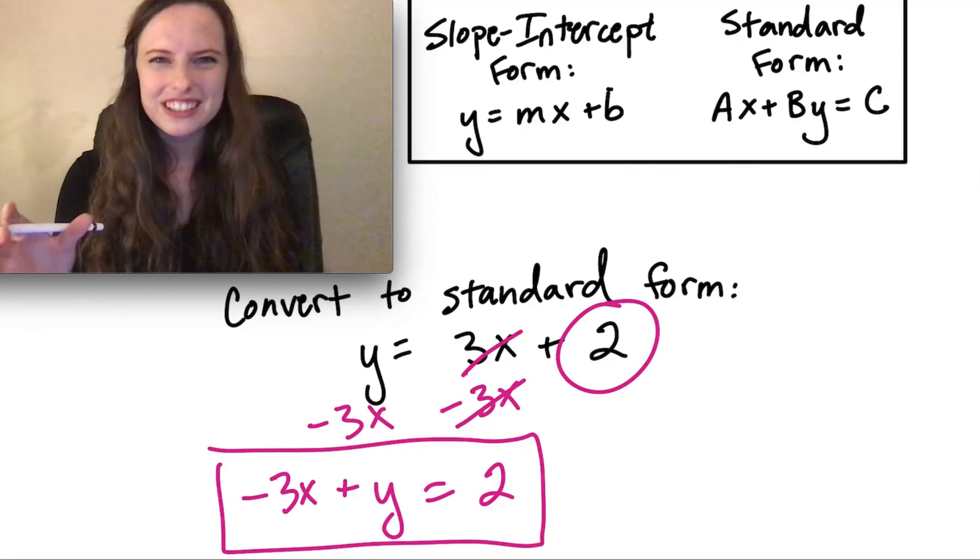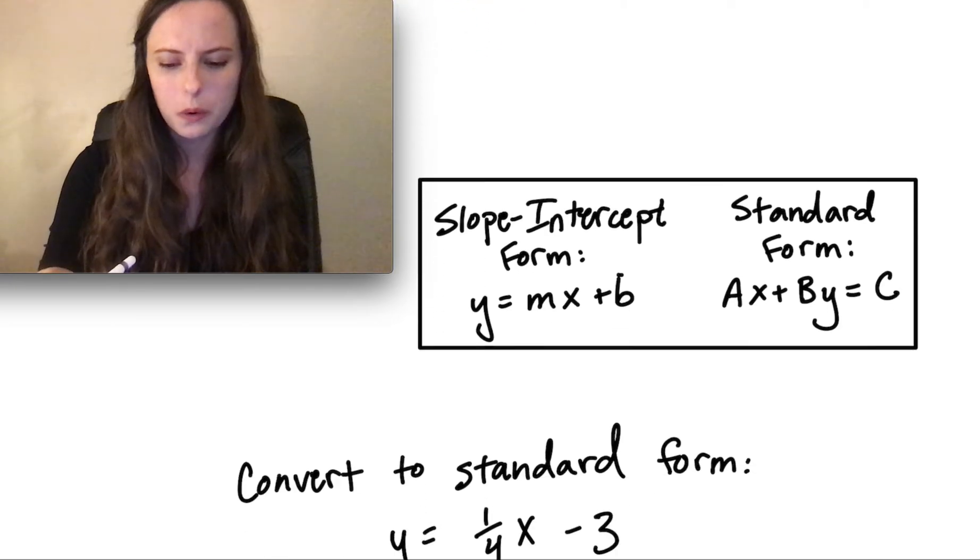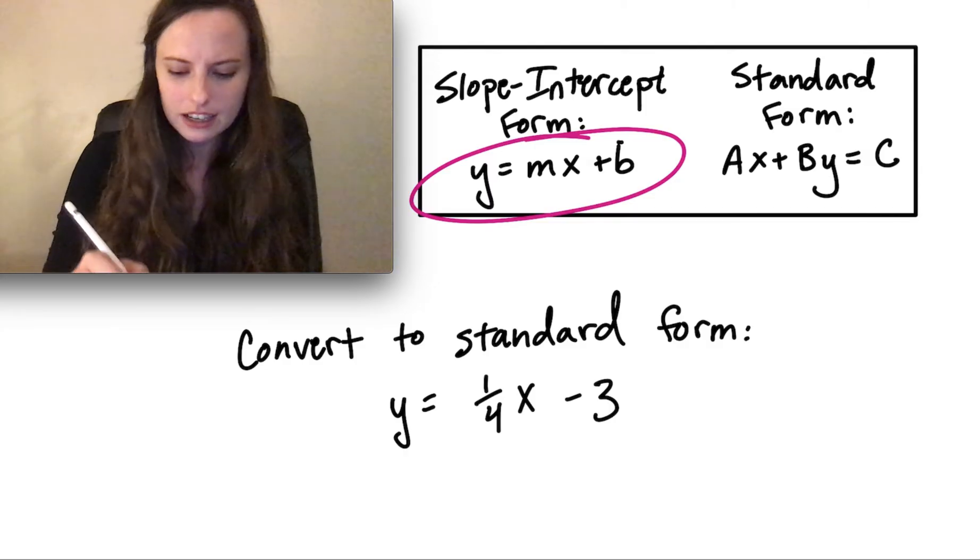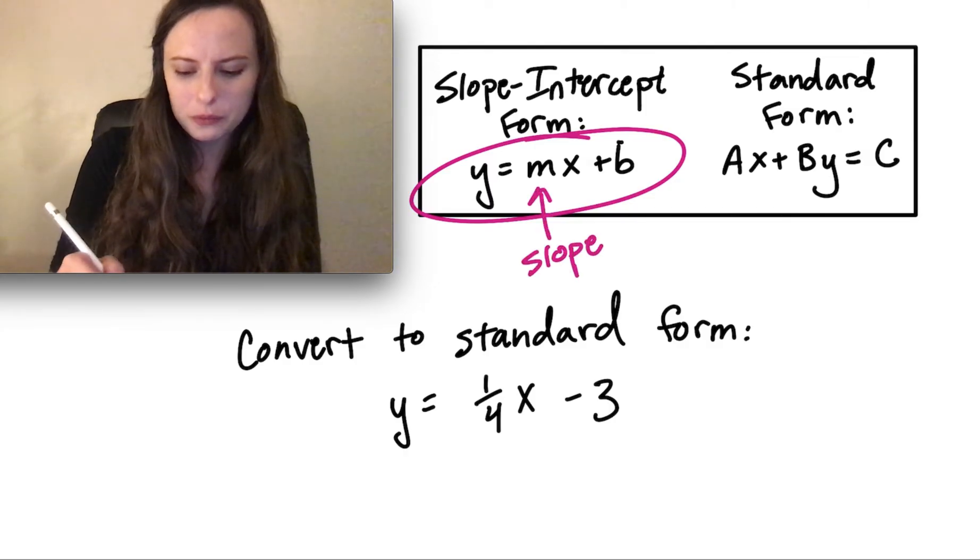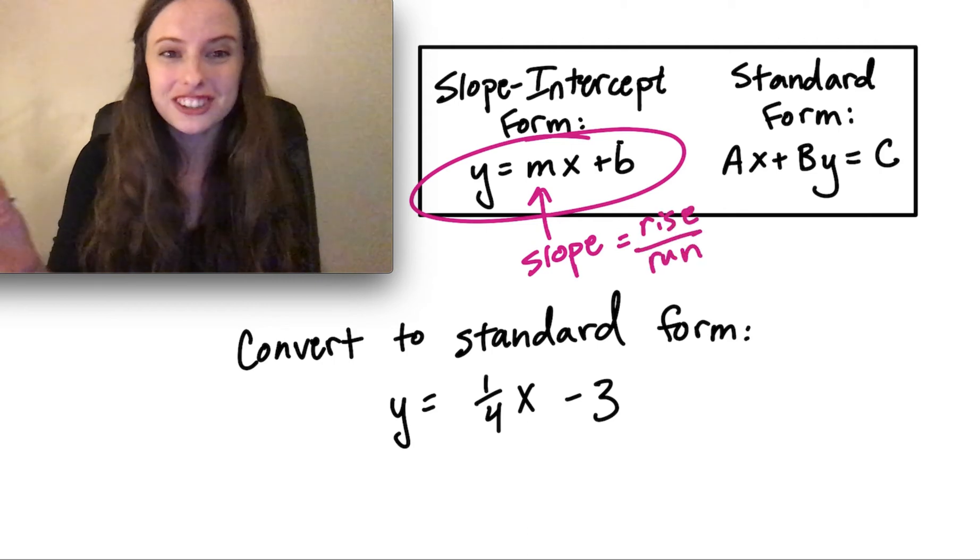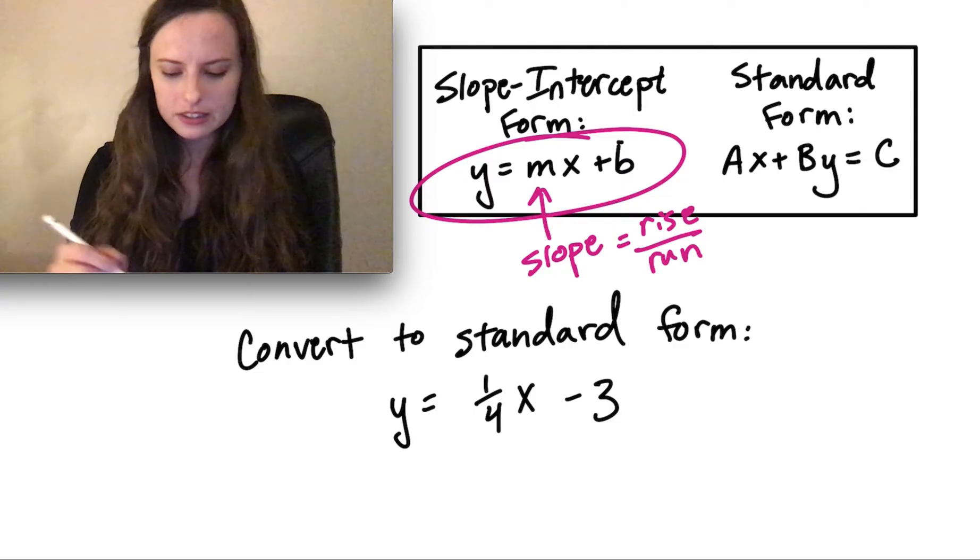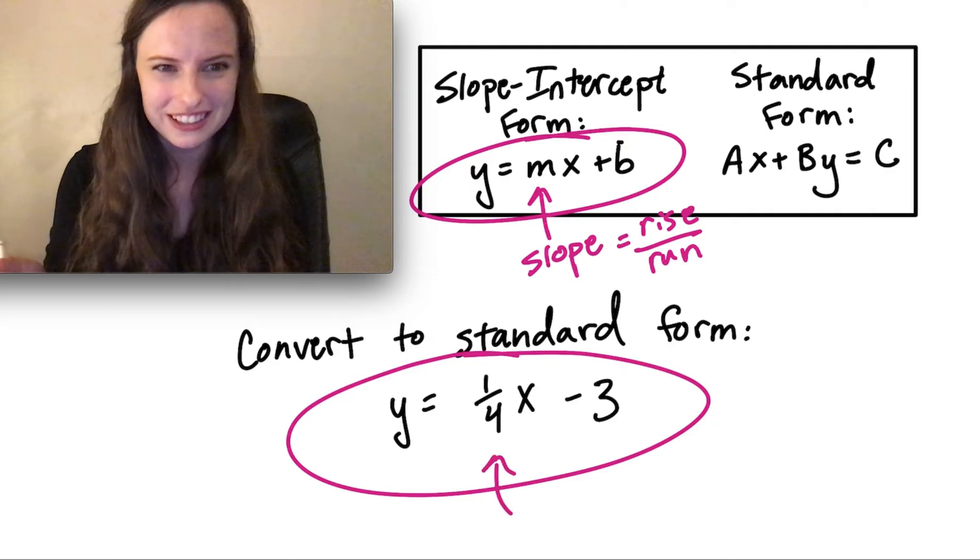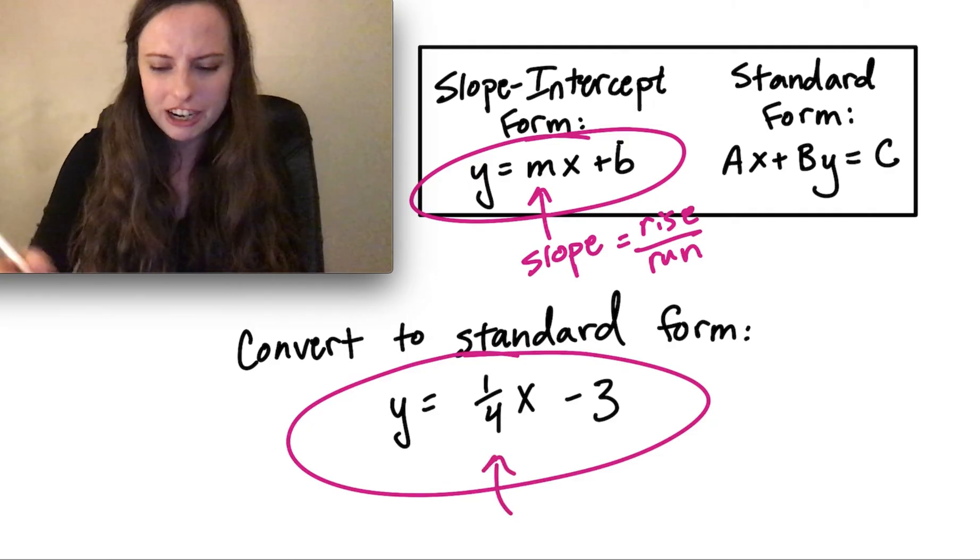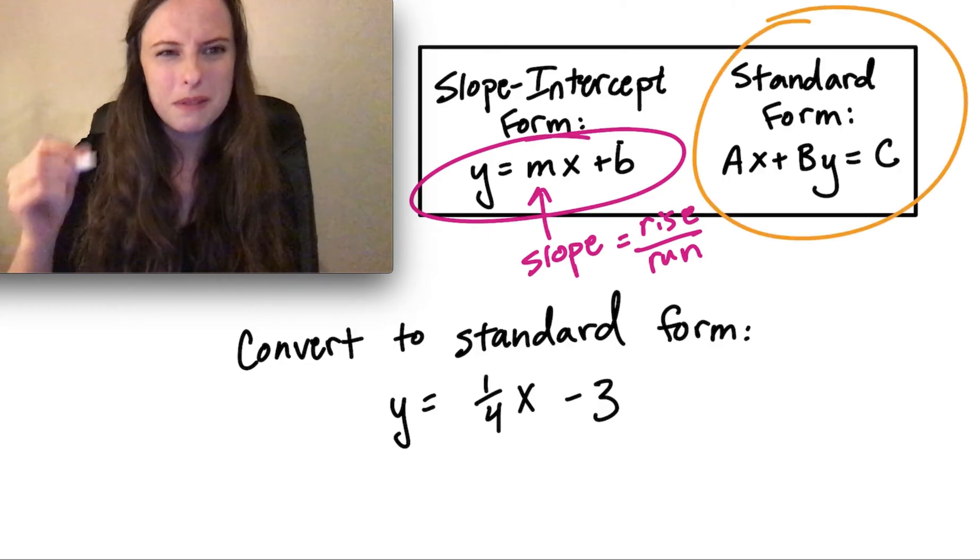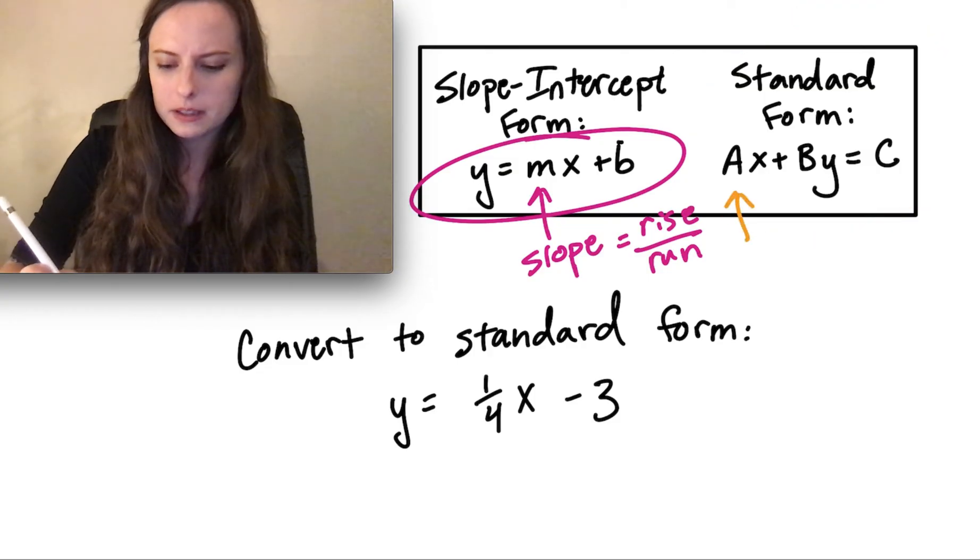So now let's try a more interesting type of problem where our slope is a fraction. So remember, y equals mx plus b. That m is a slope. And we know that slope is rise over run. That's a fraction. So it makes sense that we're going to see a lot of equations in slope-intercept form that have fractions in them because slope is often a fraction. The problem with this, however, is that in standard form, typically, we want the a, b, and c values to be integers.